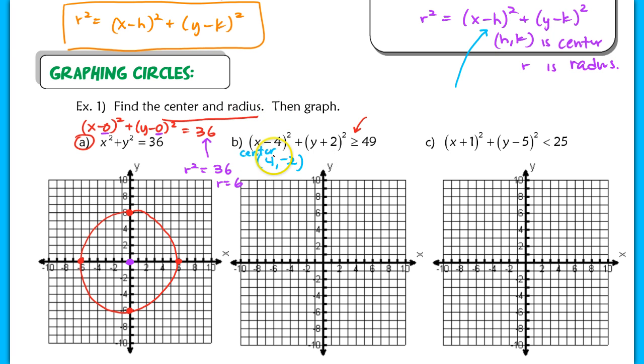I place the center at (4, negative 2). The radius: r squared is 49, so r is 7. I go up 7, left 7, down 7 — landing at negative 9 — and right 7, landing at 11.